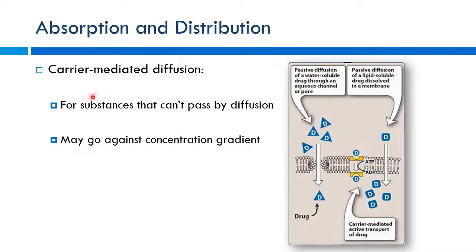There are also carrier-mediated types of diffusion, good for substances that cannot cross membranes on their own. Transport proteins can allow this. Some active transport proteins use ATP to move drugs against the concentration gradient. Others, like glucose transporters, enable facilitated diffusion without energy — still going from high to low concentration.